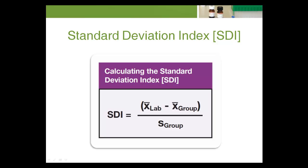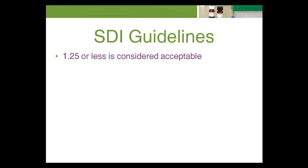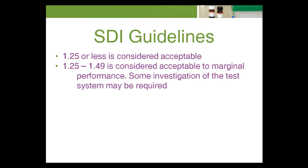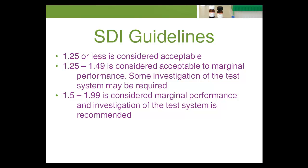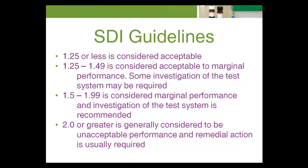Now let's move on to the Standard Deviation Index (SDI). SDI is a peer-based estimate of reliability. If the peer group mean is defined as mean-group, the standard deviation as S-group, and the laboratory's mean as mean-lab, the target SDI is zero, which indicates a perfect comparison with the peer group. The following guidelines may be used with SDI: a value of 1.25 or less is considered acceptable; 1.25 to 1.49 is acceptable to marginal performance and some investigation may be required; 1.5 to 1.99 is marginal performance and investigation is recommended; 2.0 or greater is generally considered unacceptable performance, and remedial action is usually required.